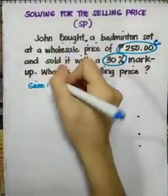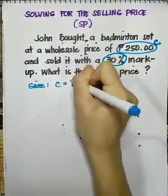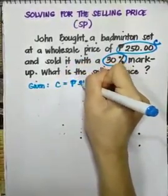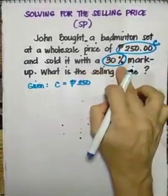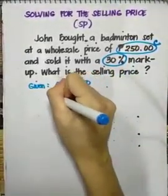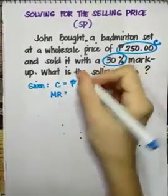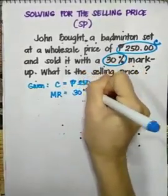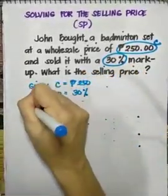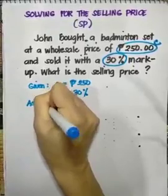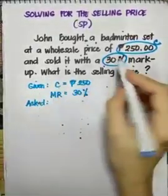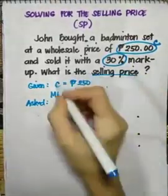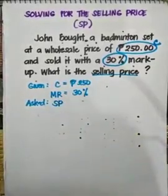Our given is the cost, the original price of the badminton set, which is 250 pesos. 30% is our markup rate or MR. What is asked in the problem? The selling price or SP.